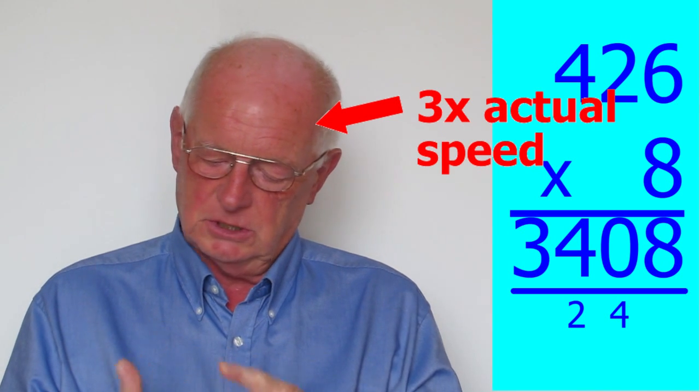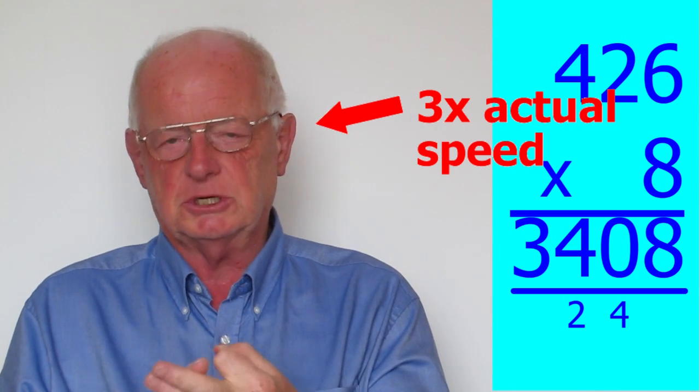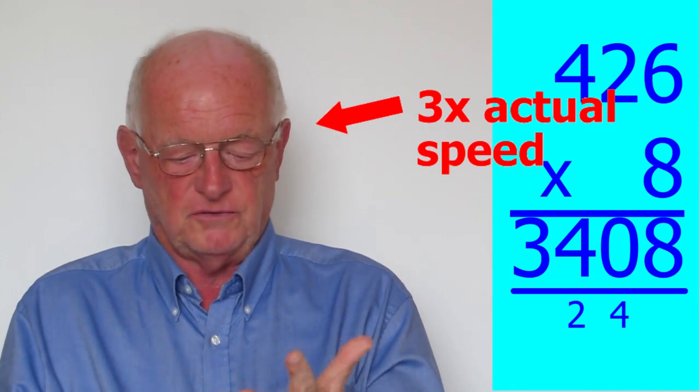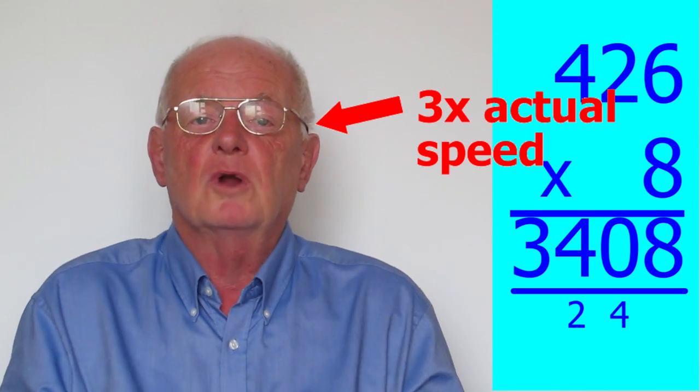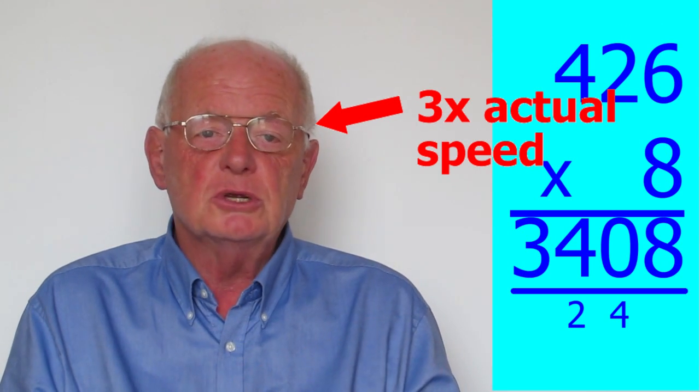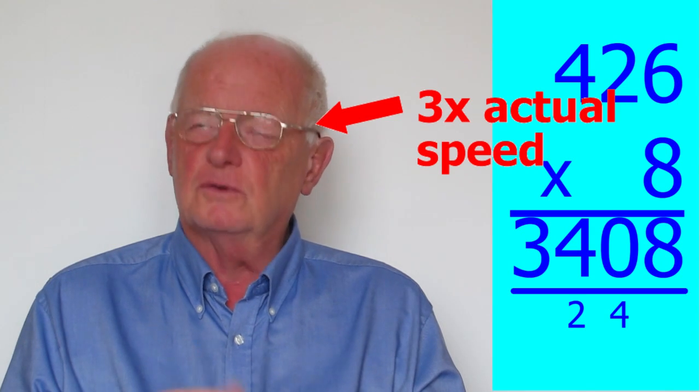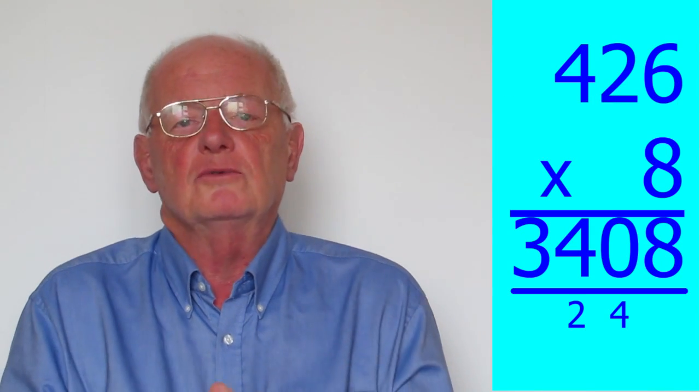Eight twos, 2, 4, 6, 8, 10, 12, 14, 16. 16 plus 4, 22, 20. Write down the 0, carry the 2. Eight fours are eight fours. Four, eight. Well, you've got the idea.